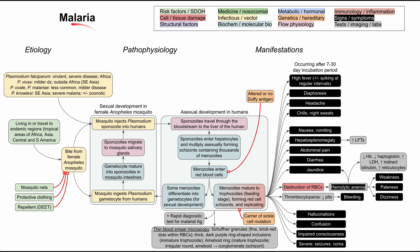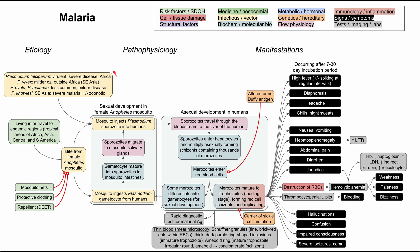This is a mechanism of disease map for malaria. I'll be talking about the etiology, the pathophysiology, the life cycle, and the manifestations of malaria. As in all of these flowcharts, each of these boxes is color-coded according to the concepts you see in the top right, and I'll be discussing each of these boxes one by one as we repopulate this flowchart.